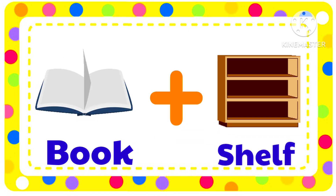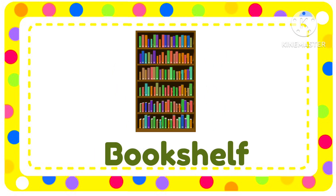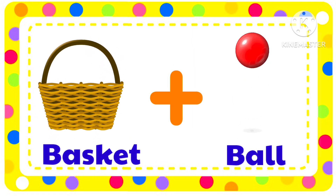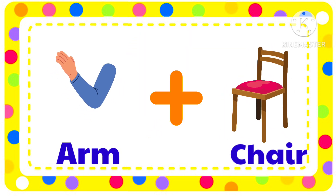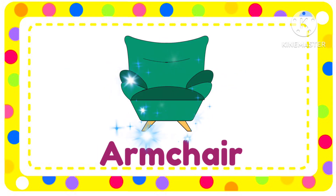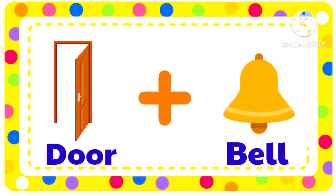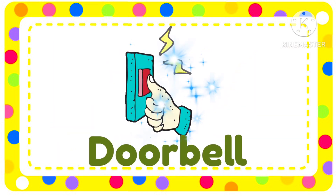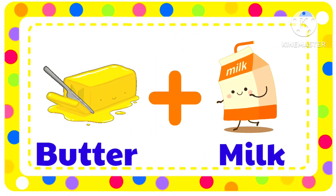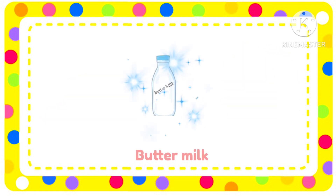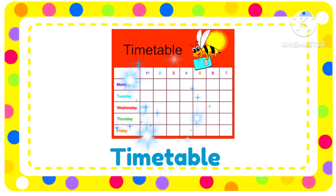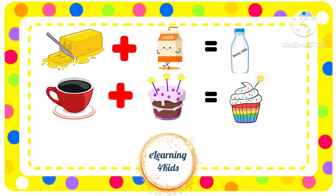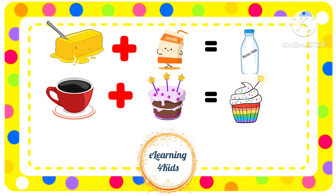Book plus Shelf — Bookshelf. Basket plus Ball — Basketball. Arm plus Chair — Armchair. Door plus Bell — Doorbell. Butter plus Milk — Buttermilk. I hope you enjoyed this video and learnt about compound words with their examples.